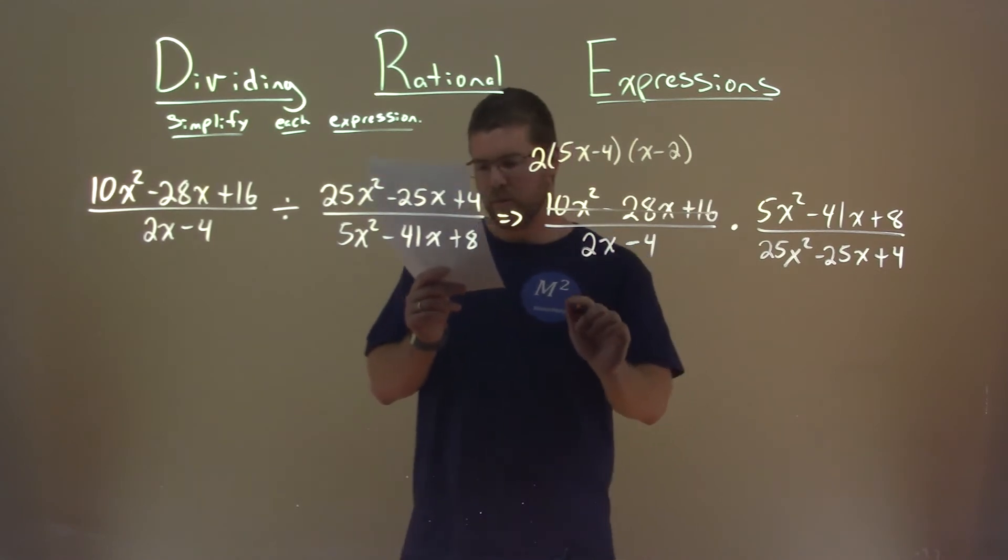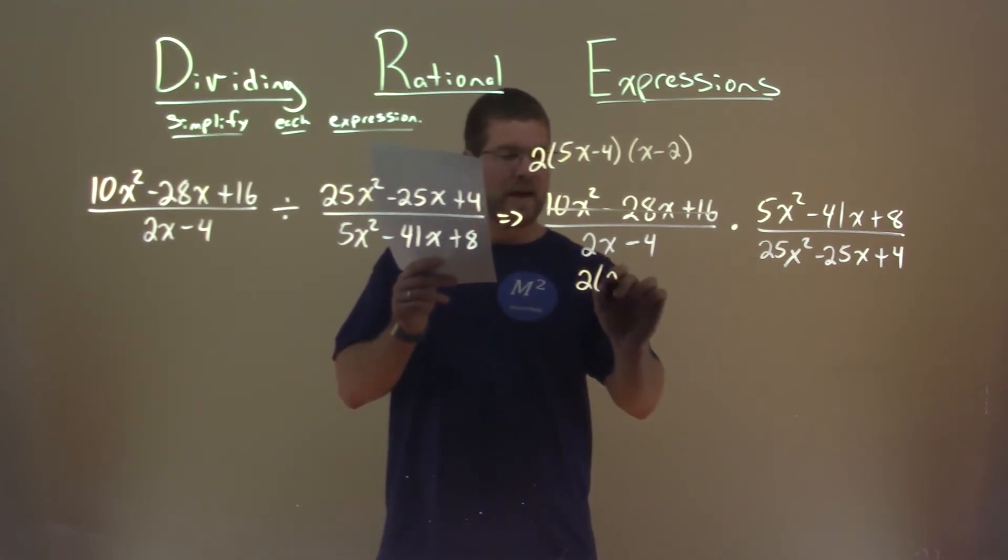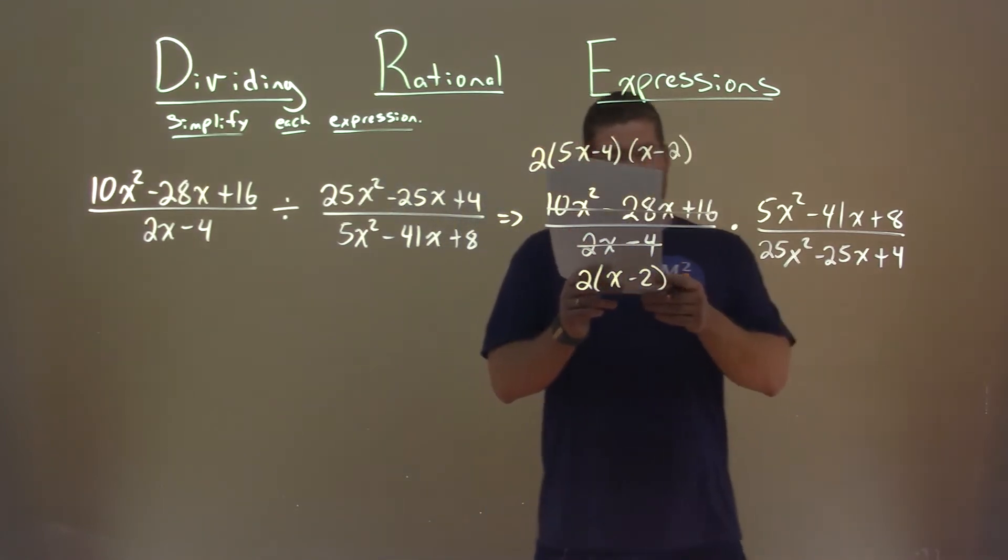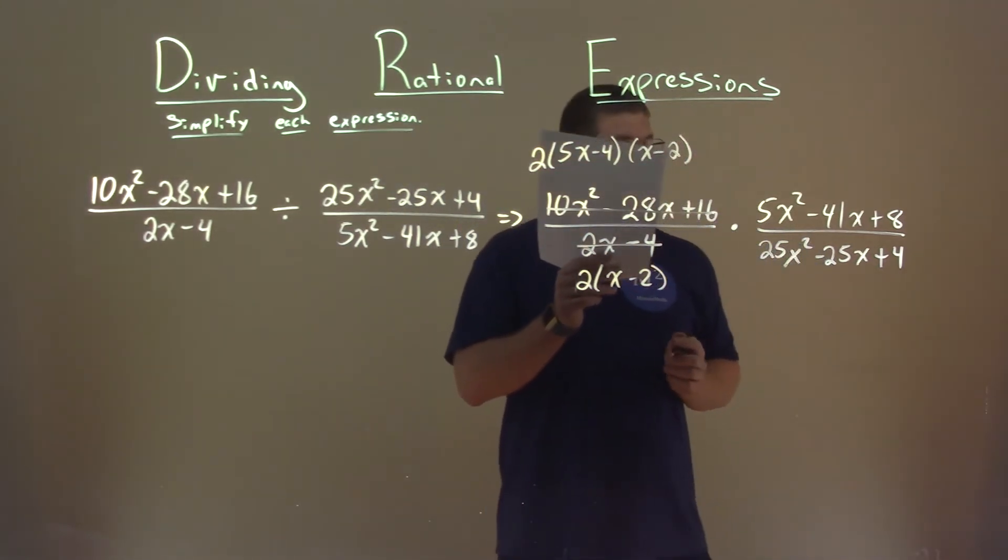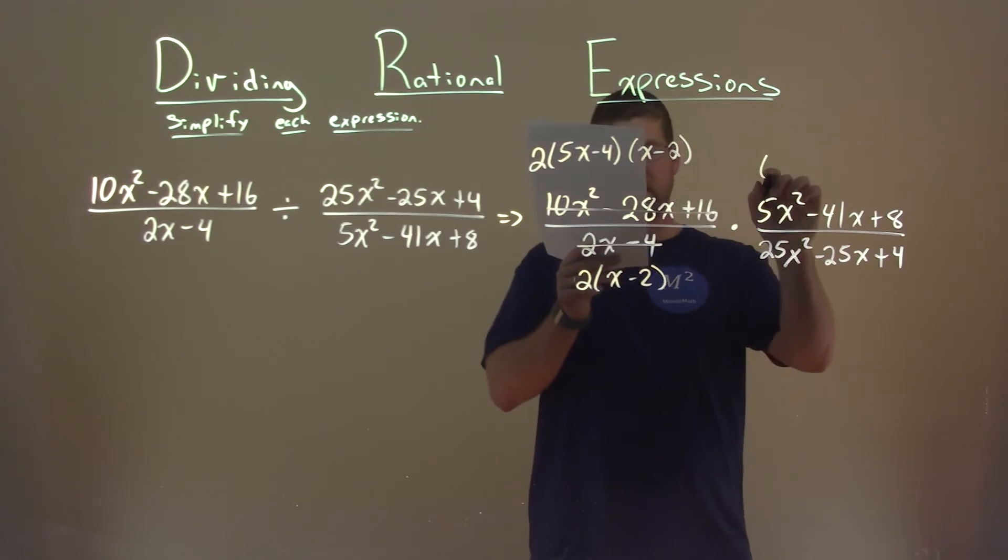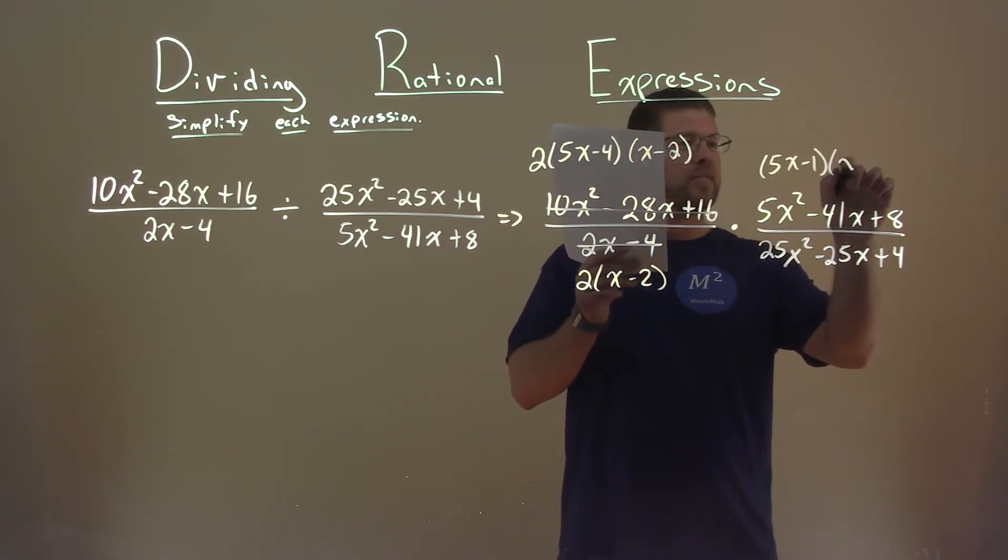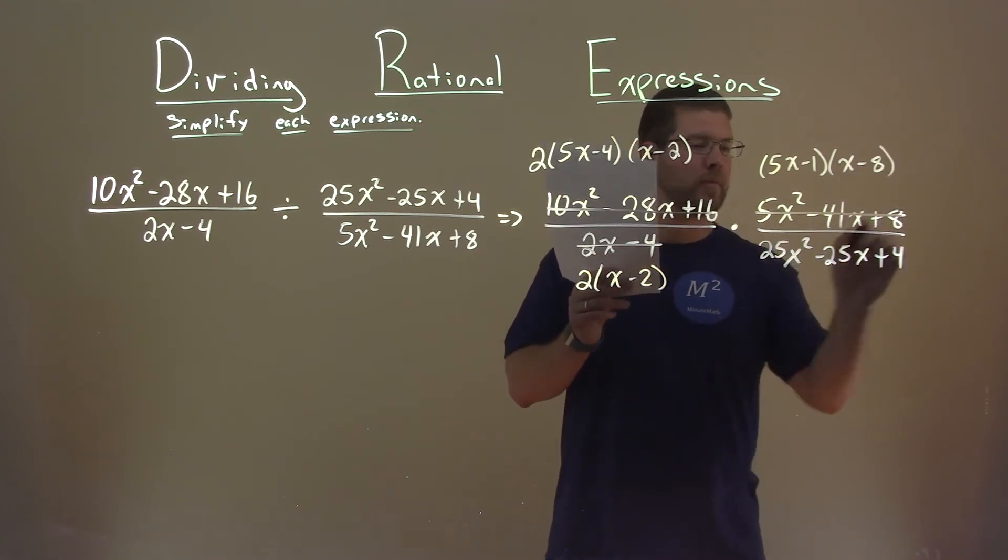The 2x minus 4, we pull out a 2, and you have 2 times x minus 2. Replace that. 5x squared minus 41x plus 8 factors to be 5x minus 1 times x minus 8, and let's replace that.